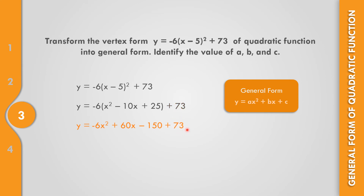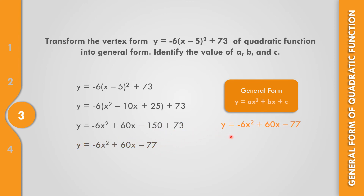Bring down 73, then combine negative 150 plus 73, which equals negative 77. So the general form of the quadratic function is y equals negative 6x squared plus 60x minus 77. The value of a, the numerical coefficient of x squared, is negative 6. The value of b is 60, and c is negative 77.